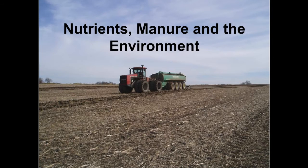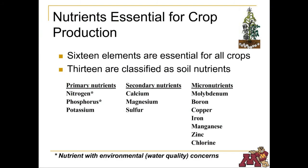Nutrients, manure, and the environment. There are 16 elements essential for all crops. Most soils already have micronutrients required for plant growth. If needed, secondary nutrients will be added, such as calcium, magnesium, and sulfur.